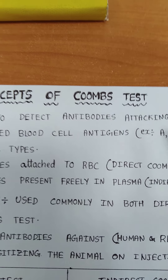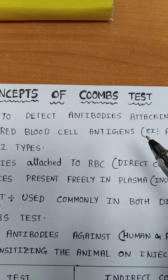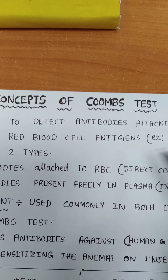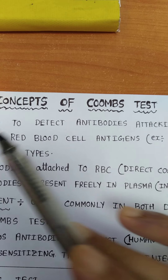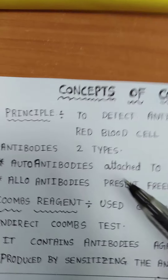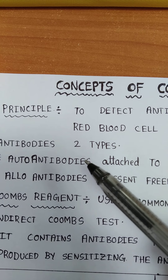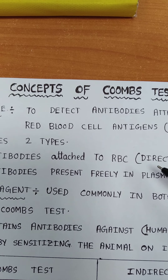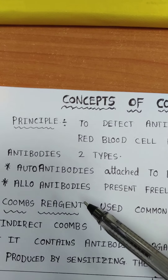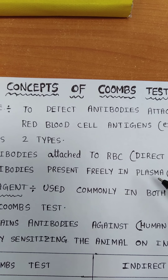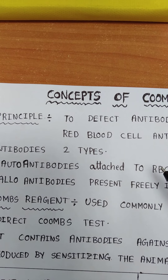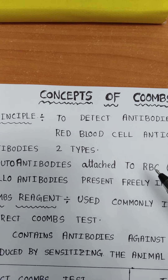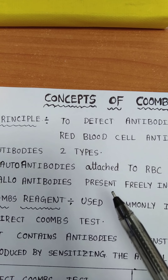These antibodies attack red blood cell antigens, leading to destruction and hemolysis of red blood cells. The two types of antibodies are autoantibodies and alloantibodies. Autoantibodies are attached to the RBC membrane whereas alloantibodies are present freely in the plasma. Autoantibodies destroy and hemolyze the body's own RBCs, whereas alloantibodies will not destroy the body's own RBCs.